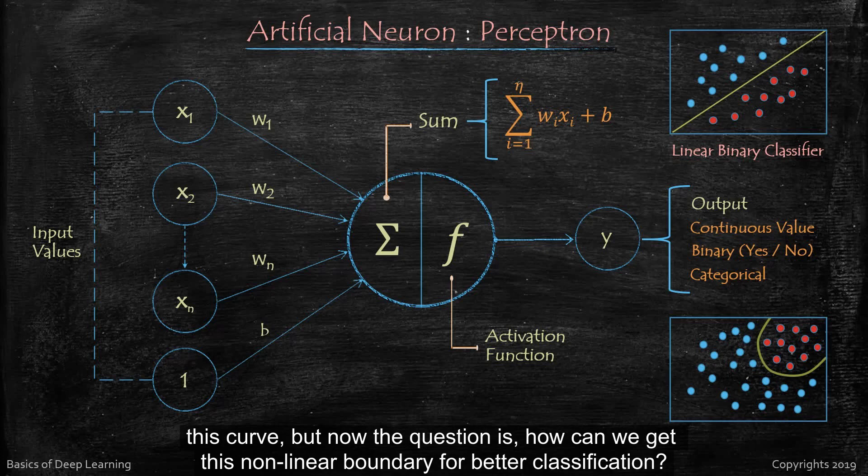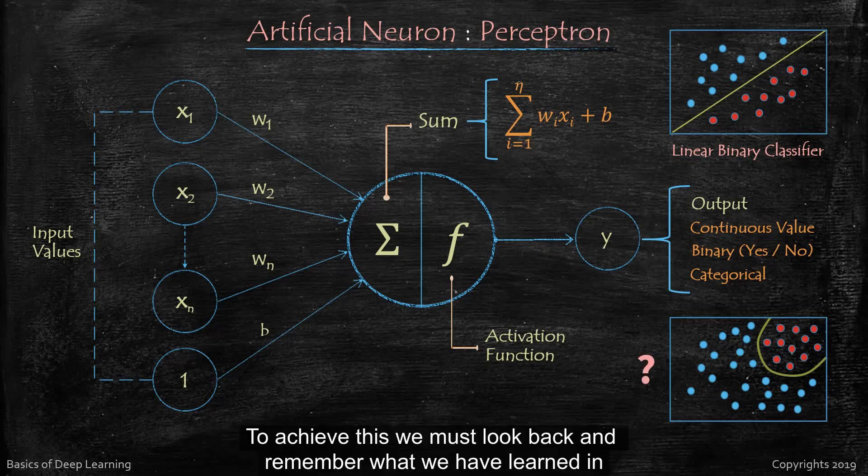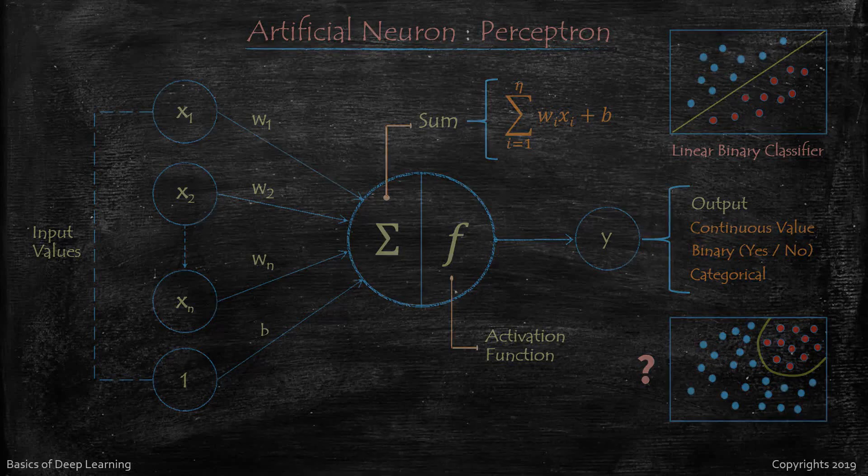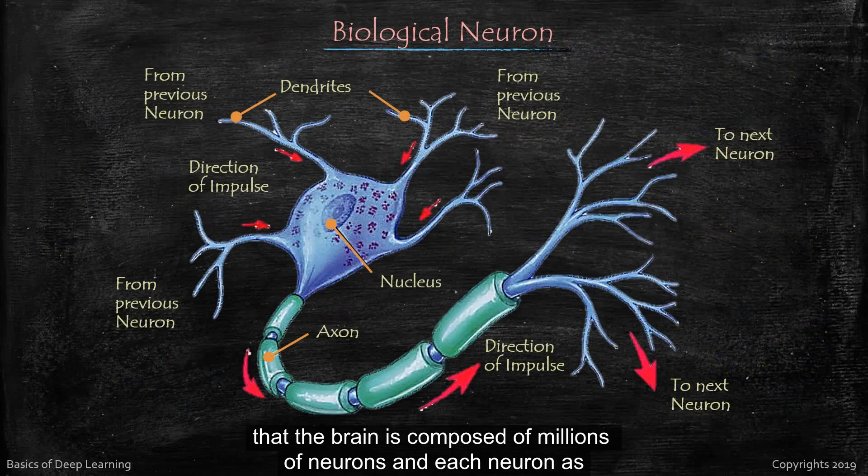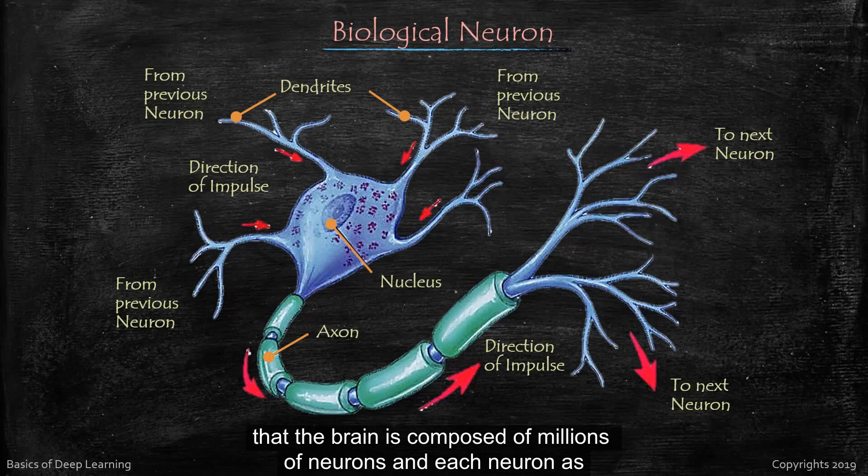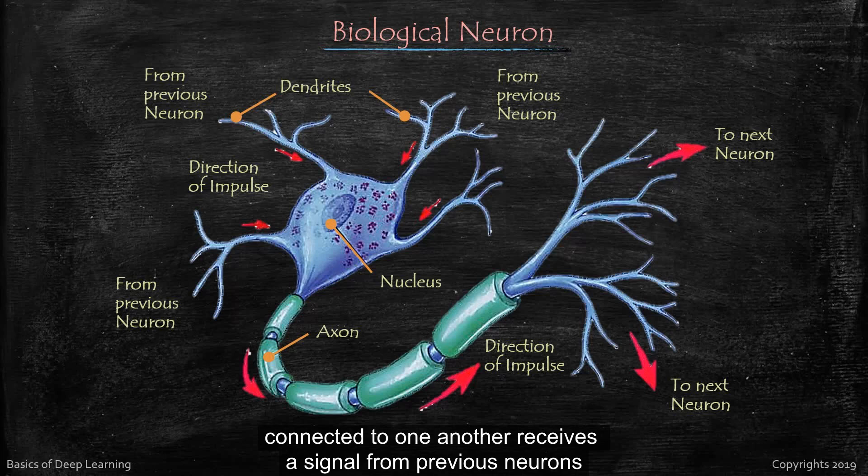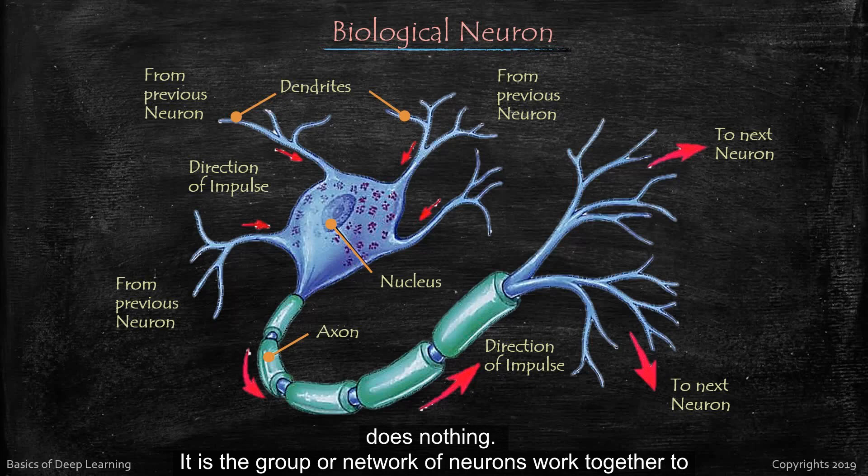But now the question is how can we get this nonlinear boundary for better classification? To achieve this we must look back and remember what we have learned in our previous video. We have seen that the brain is composed of millions of neurons and each neuron is connected to one another, receives a signal from previous neurons, processes it and sends it to the next neuron.